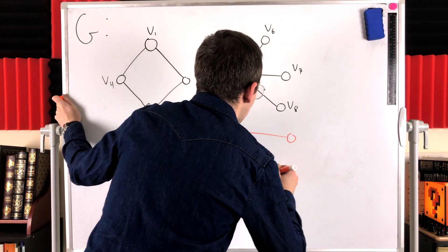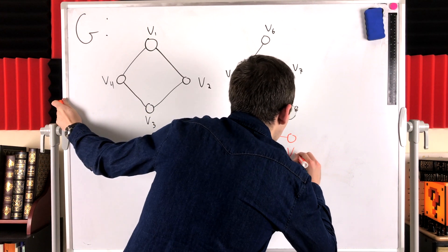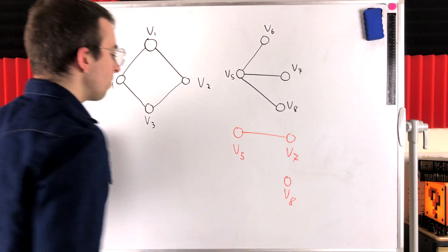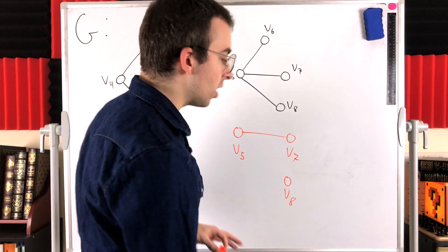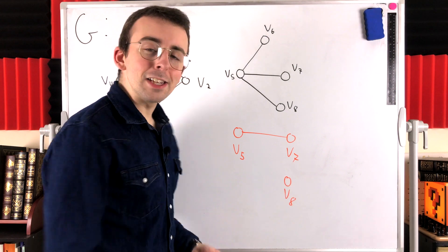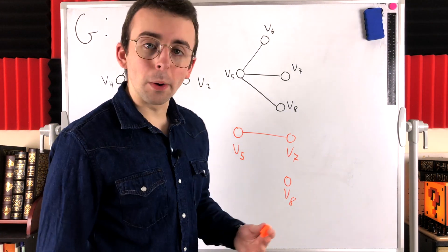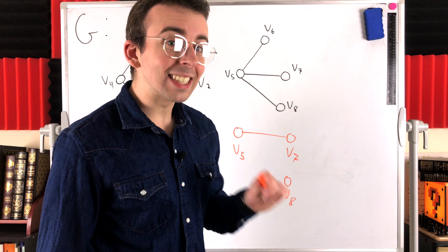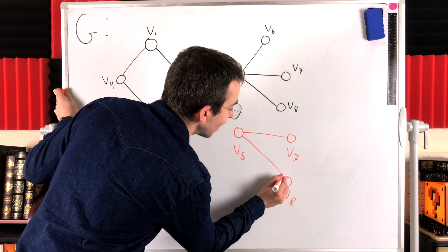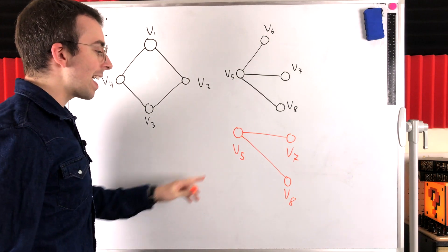If we look at the vertex V5, the vertex V7, the edge joining them and the vertex V8, is this a component of G? Well, we can immediately rule it out. No, it's not because it's not even connected. So it cannot be a component, because a component is a maximal connected subgraph. So maybe we make it connected by including this edge from V5 to V8.